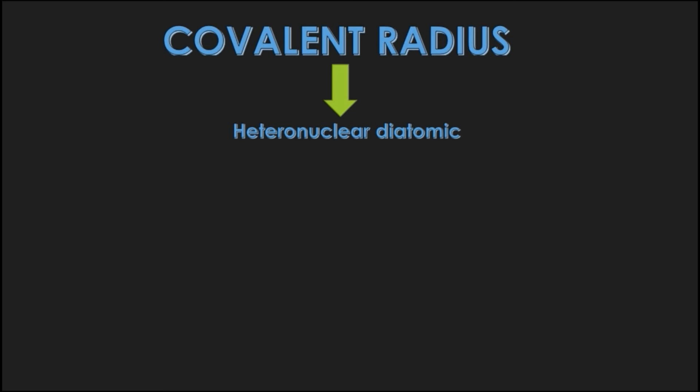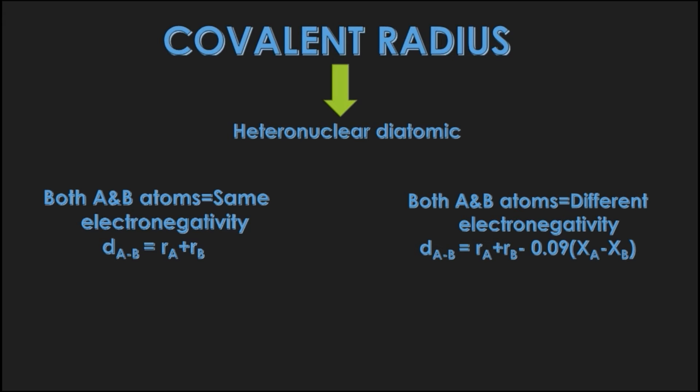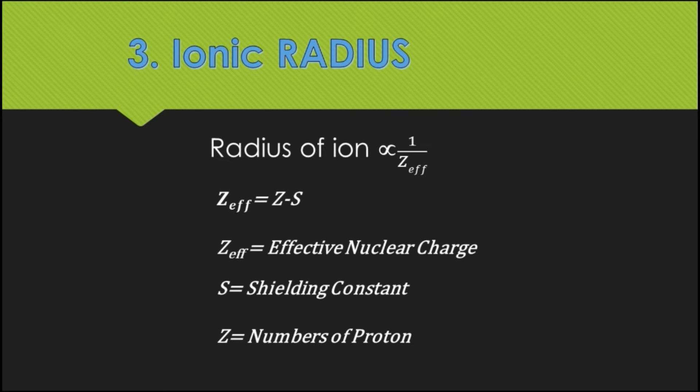First, when both atoms have the same electronegativity, and second, when both atoms have different electronegativity. This relation is given by Shoemaker and Stevenson. Third is ionic radius.